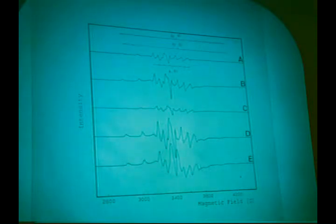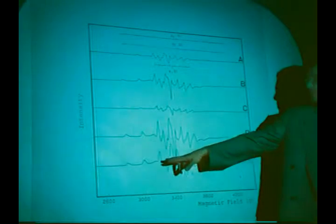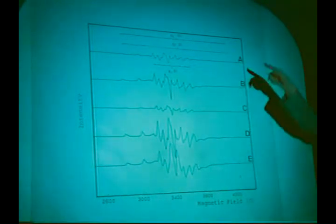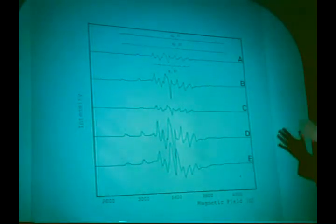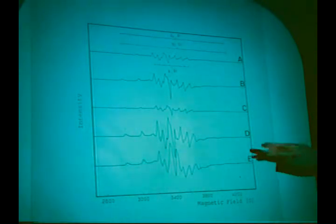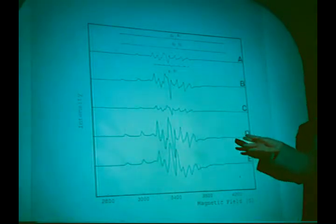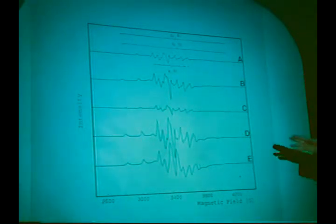This vanadium 4+ is a D1 system with an I of 7 over 2, so it's giving an octet structure if it is an isotropic signal. It is following the Curie-Weiss law, so we have to do with an isolated vanadium species. When you are increasing the vanadium content, you have the formation of a broad band under these two signals, centered around G2. Then the spectrum is not following the Curie-Weiss law, indicating the presence of some oxidic vanadium phase.